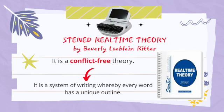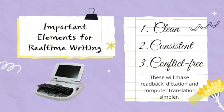Standard Real-Time Theory by Beverly Louie Blaine Richard is termed a conflict-free theory because it is a system of writing whereby every word has a unique outline. There will no longer be two or more words sharing the same outline — each word has its own unique outline. Lastly, there are three important elements for real-time writing: first, clean; second, consistent; and third, conflict-free. These elements make readback, dictation, and computer translation simpler.